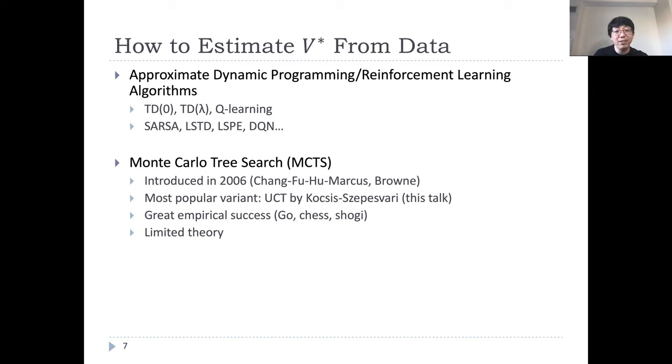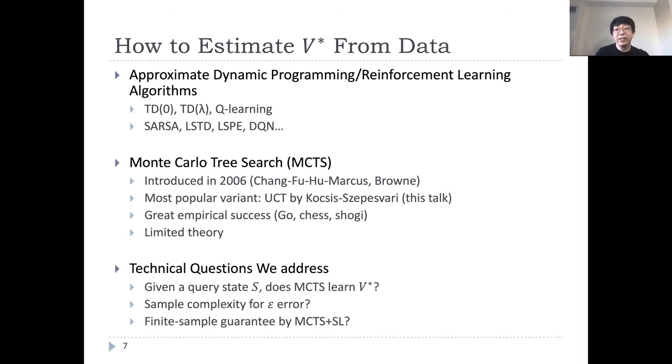MCTS achieved great empirical performance recently, serving as the main driving force of the performance in games of Go and Chess. However, the theory of this field is relatively limited. In this talk, we focus on the most popular variant, referred as upper confidence tree. Now, with this background, we formalize the previous questions we want to address.